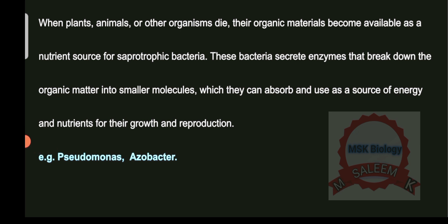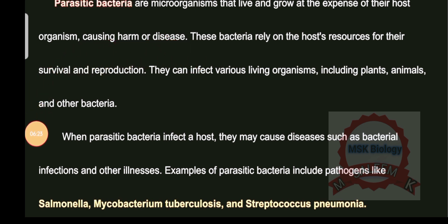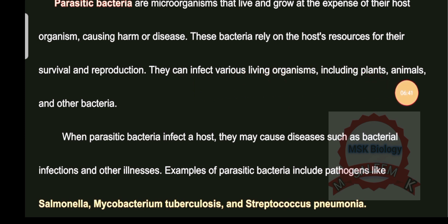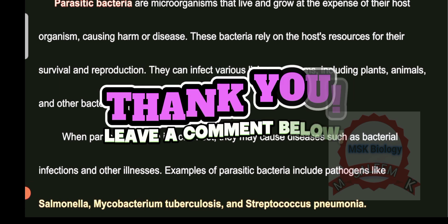Examples of saprotrophic bacteria include Pseudomonas and Azotobacter. Now, parasitic bacteria are microorganisms that live and grow at the expense of their host organisms, causing harm or disease. They rely on the host's resources for survival and reproduction, and can infect plants, animals, and other bacteria. Examples include pathogenic bacteria such as Salmonella, Mycobacterium tuberculosis, and Streptococcus pneumoniae.